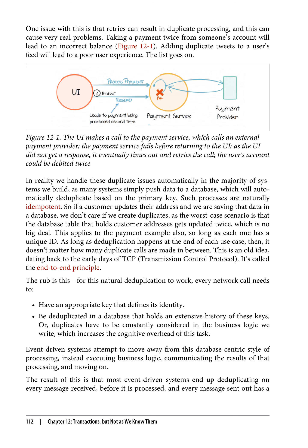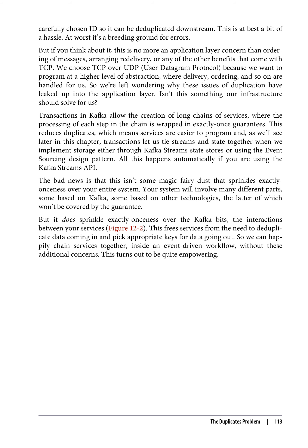Event-driven systems attempt to move away from this database-centric style of processing, instead executing business logic, communicating the results of that processing, and moving on. The result is that most event-driven systems end up deduplicating on every message received before it is processed, and every message sent out has a carefully chosen ID so it can be deduplicated downstream. This is at best a bit of a hassle, and at worst a breeding ground for errors. But if you think about it, this is no more an application layer concern than ordering of messages, arranging redelivery, or any of the other benefits that come with TCP. We choose TCP over UDP — user datagram protocol — because we want to program at a higher level of abstraction, where delivery, ordering, and so on are handled for us. So we're left wondering why these issues of duplication have leaked up into the application layer. Isn't this something our infrastructure should solve for us?